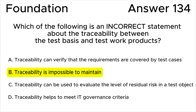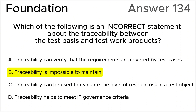Answer D is invalid because this statement is correct. Traceability helps in meeting IT governance criteria by providing visibility into the relationship between different artifacts, helping in compliance and decision-making processes.